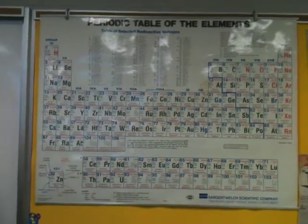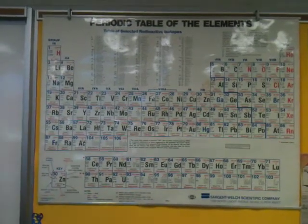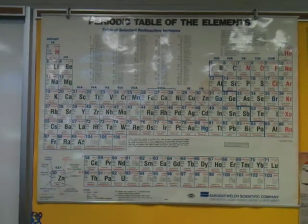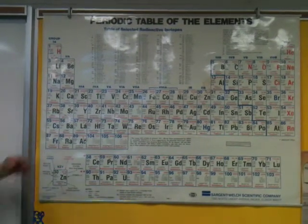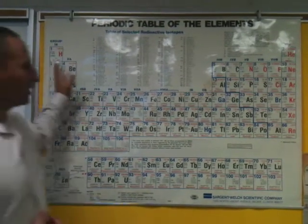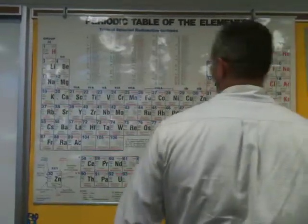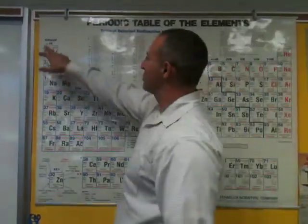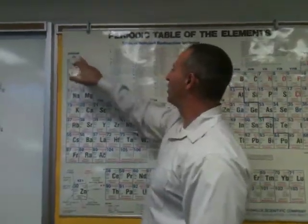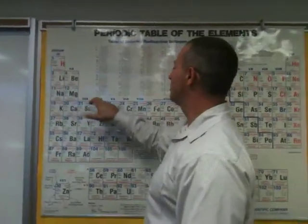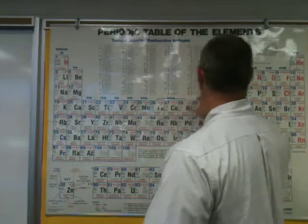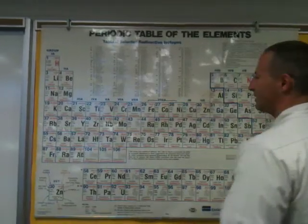Let's recap how we've memorized the periodic table. In the periodic table there are 18 groups from left to right. The group numbers appear at the top — 1, 2, 3, 4, 5, and so on, all the way to 18.